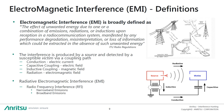The interference is produced by a source and detected by a susceptible victim via some coupling path. We can divide such coupling paths into four different kinds, as depicted in this slide. You have conduction, which is simply electric current traveling via a conductive path between source and victim. It's quite common in cabling installations when the bonding and grounding systems used for power and communications are not sufficiently isolated.